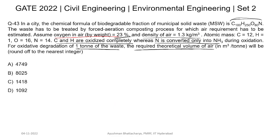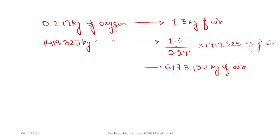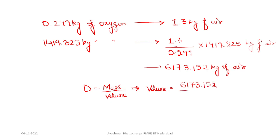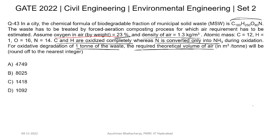The question asks for the theoretical volume of air. Using density = mass / volume, we get volume = mass / density = 6173.152 / 1.3 = 4748.57 meter cube. So the required theoretical volume of air is 4748.57 m³ and option A is correct.